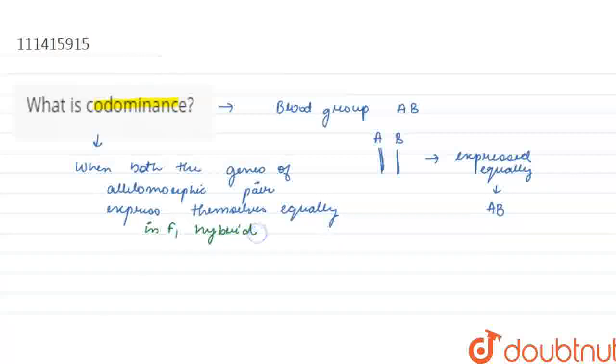So, such a situation or this type of dominance is known as co-dominance. And this example we have seen, that is ABO blood grouping in humans.